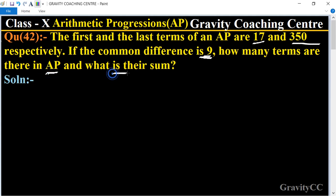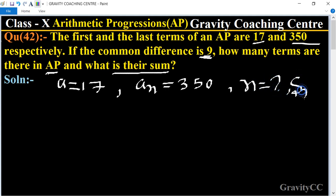Find n and also find their sum, means Sn. So first we write here: first term equal to 17, and the last term, means an, last term is 350. So find n and Sn equal to what? You also given d equal to 9.